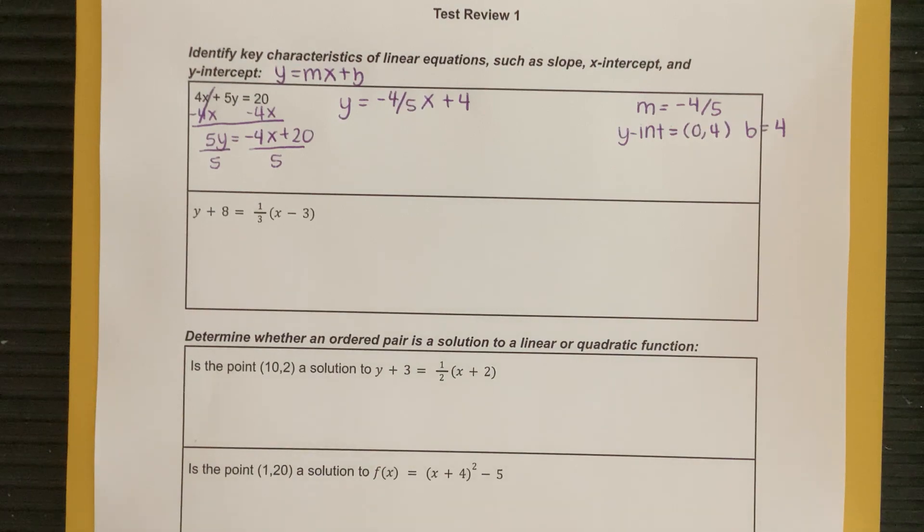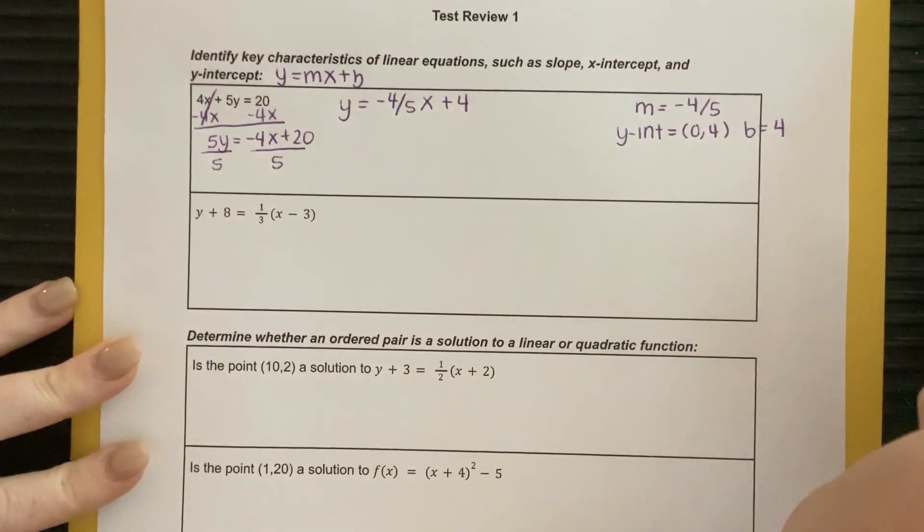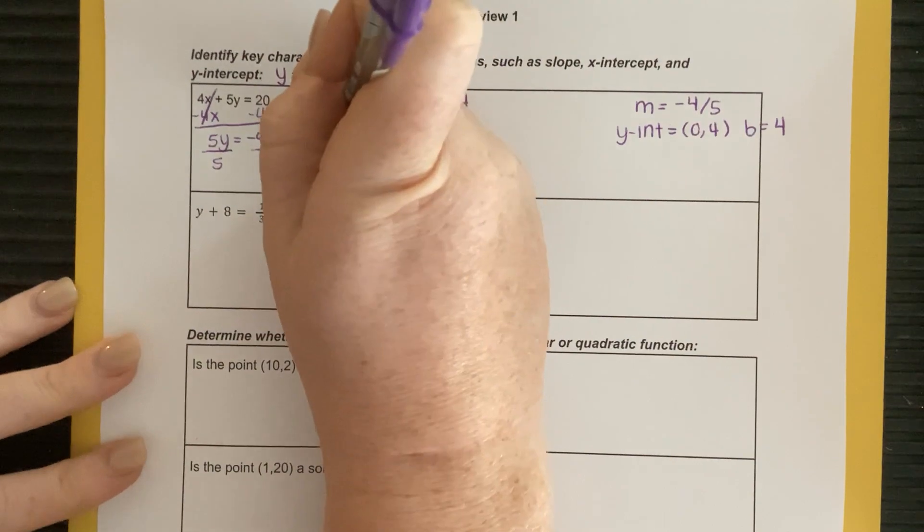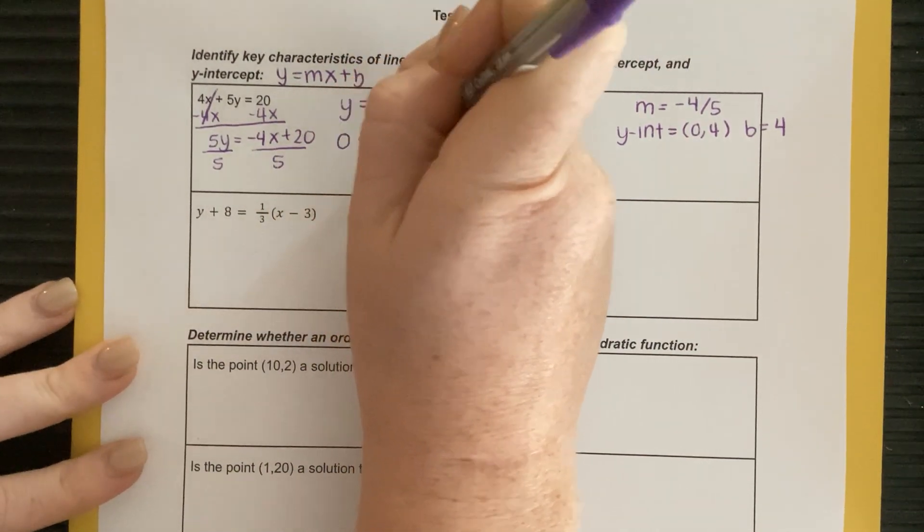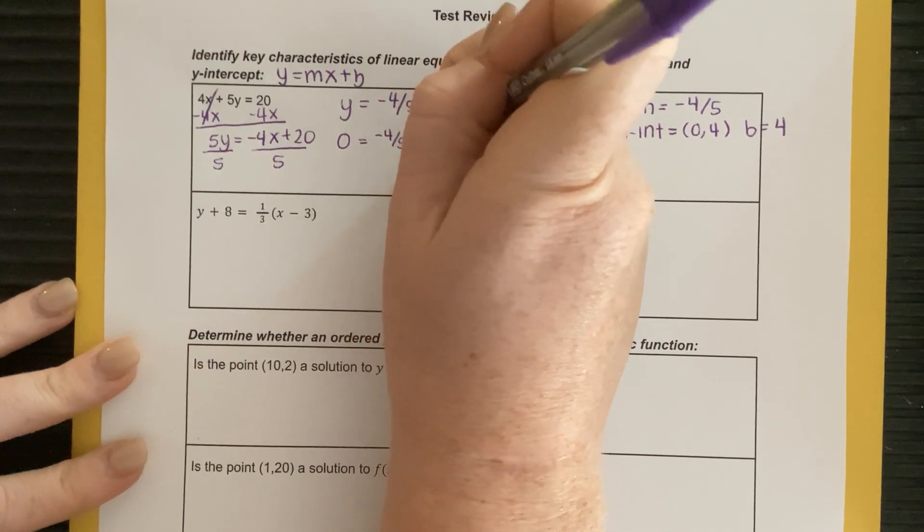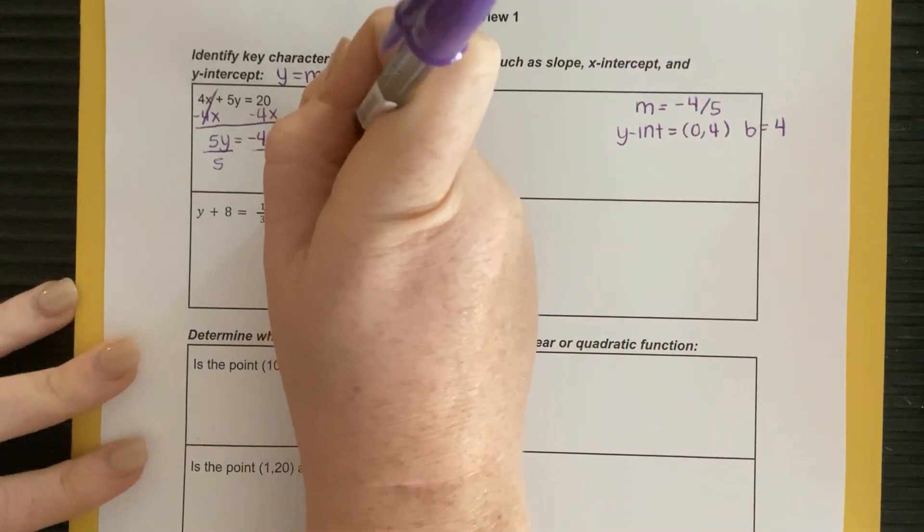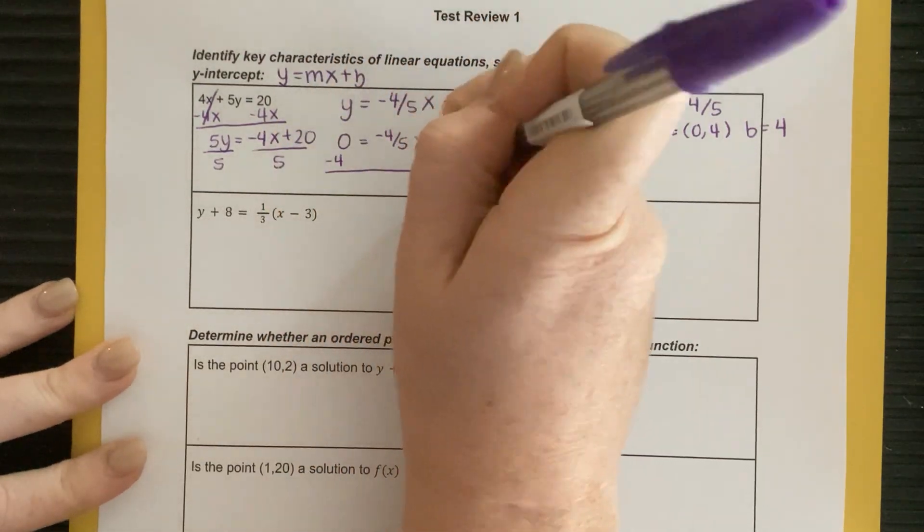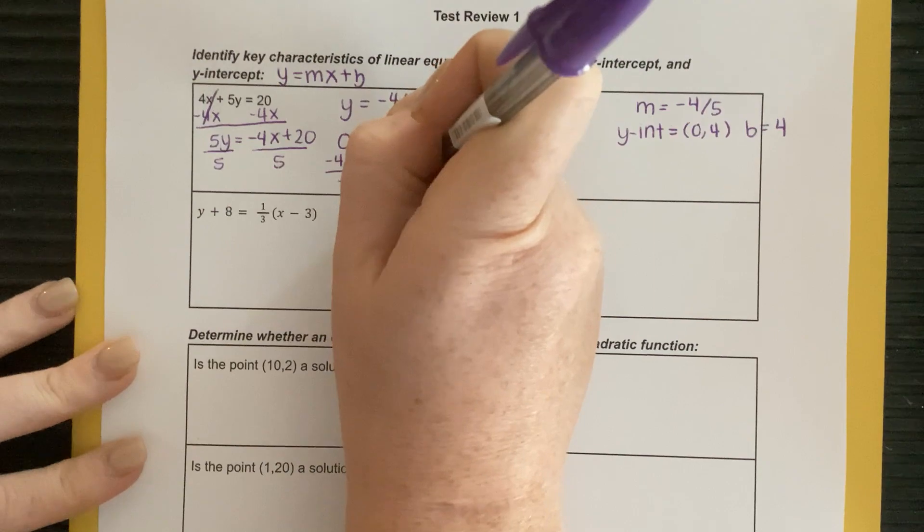All right, next thing is it wants to find the x-intercept. The x-intercept is where your y value is equal to 0. So, if I come and use this equation, or use your original equation, you'll get the same answer either way. If I plug in 0 is equal to negative 4 fifths x plus 4, I'm going to subtract 4, subtract 4. Negative 4 is equal to negative 4 fifths x.